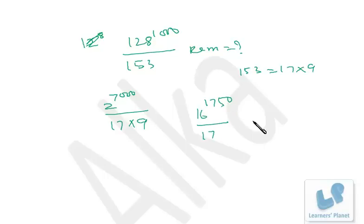That means the number is in 17x plus 1 format. When divided by 17, the remainder is 1, so the number 128 raised to 1000 is in 17x plus 1 format. Now I'll find out the remainder by 9.